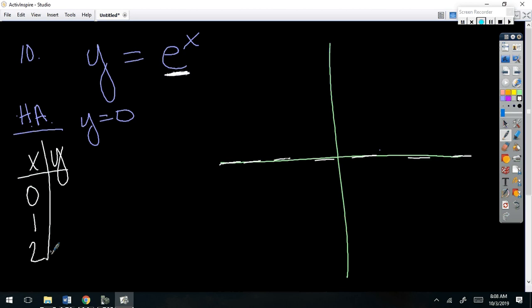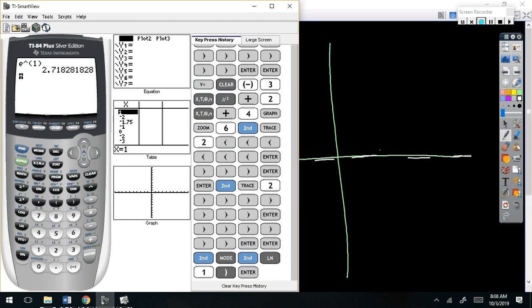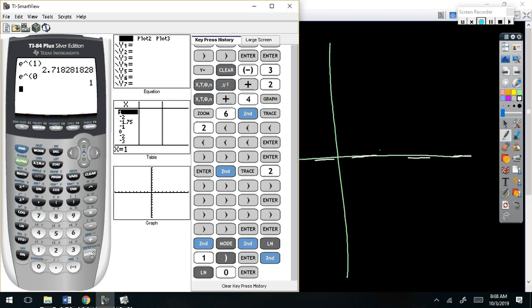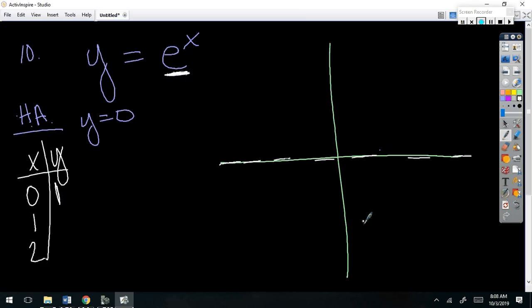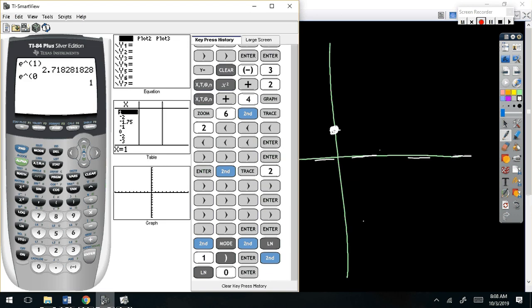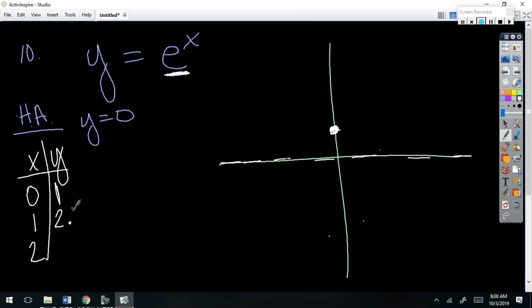Anything to the 0 power is what? 1. Anything to the 0 power is 1. Second e to the 0. So 0, 1 is a point on here. If I plug in 1, e to the first power, about 2.7 so it goes almost up to 3.